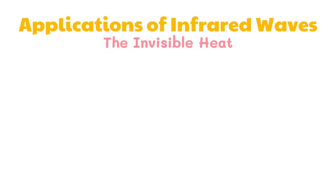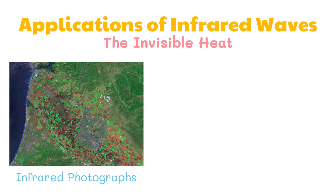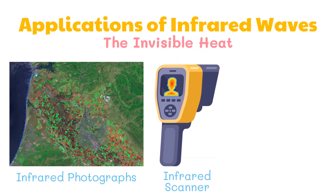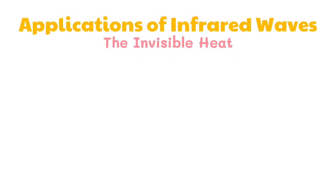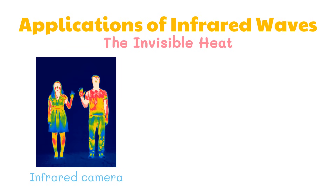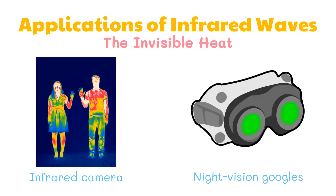The following are some useful applications of infrared radiation. Infrared photographs taken from a satellite with special films provide useful details of the vegetation on the Earth's surface. Infrared scanners are used to show the temperature variation of the body, which can be used for medical diagnosis. Infrared remote controls are used in TVs and other electronic appliances. An infrared camera has a transmitter that sends out infrared pulses. And lastly, night vision goggles allow images to be produced in levels of light approaching total darkness.